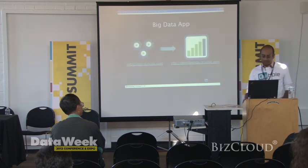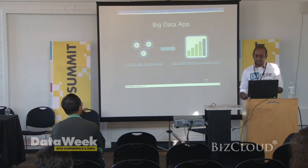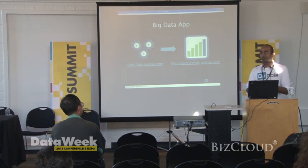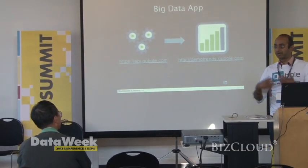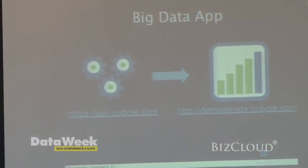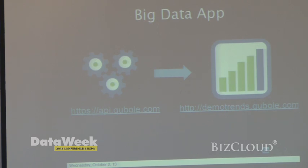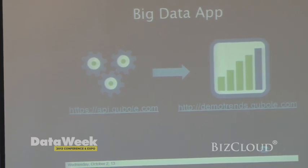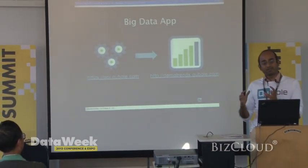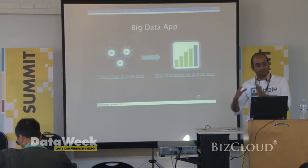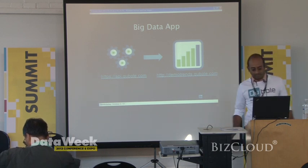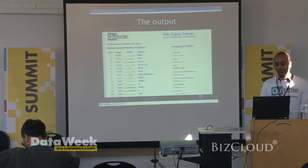What I'm going to talk about now is how you actually build an app. There are two different sites: api.qbol.com is what we offer as a service — that's where, as a customer, you come in and get access to our functionality. And we have demotrends.qbol.com, which is a sample app showing a visualization of some data you can process. I'll walk you through how we got to demotrends.qbol.com and how you would build it using api.qbol.com.